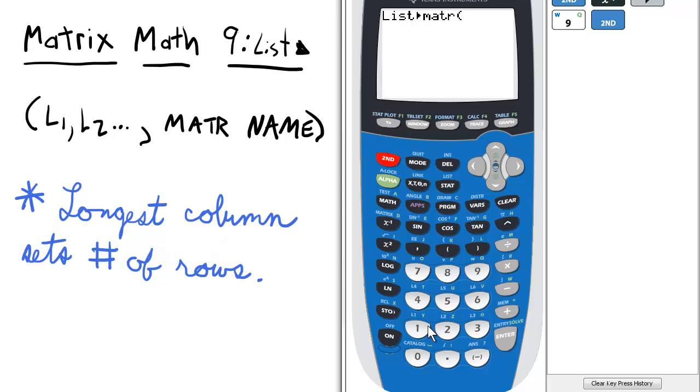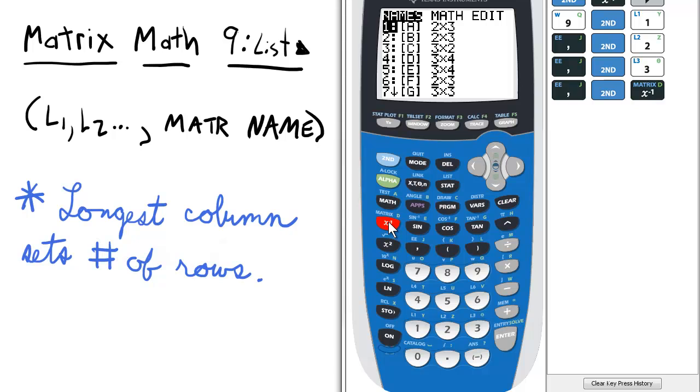I'll put L1, meaning that's going to be my first column, and then L2, and then L3, and then the last comma, and then the matrix name. So I'm going to go to my matrix menu again and scroll down and select 9 for I.